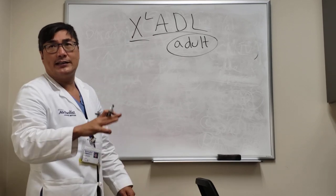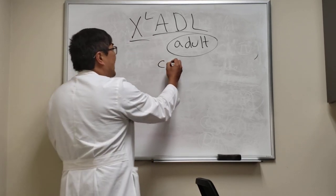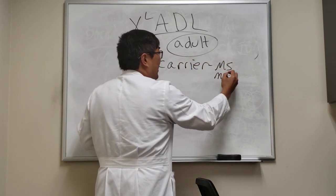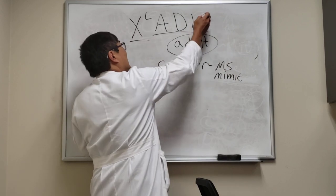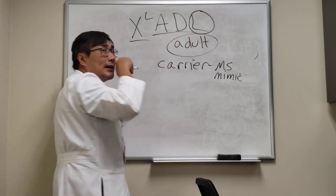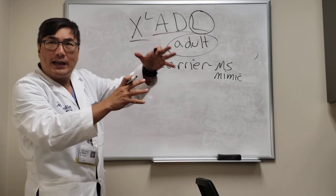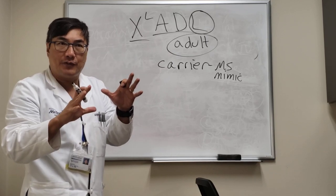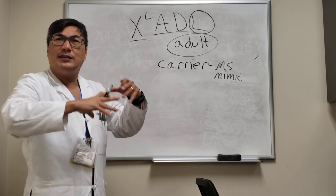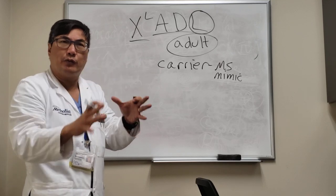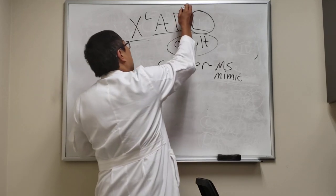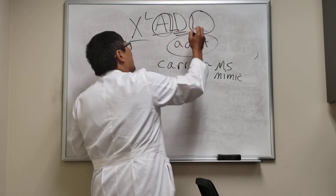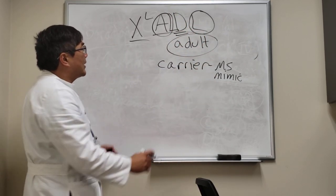The x-linked form comes to me in the carrier state — in the mother — and that could be mistaken for multiple sclerosis. It's an MS mimic, which makes sense because it's a leukodystrophy. Leukodystrophy means white matter dystrophy, so it looks like multiple sclerosis superficially, with patchy, nonspecific, and sometimes confluent white matter disease.